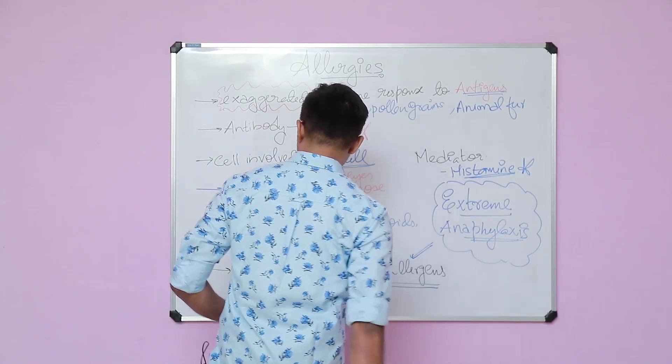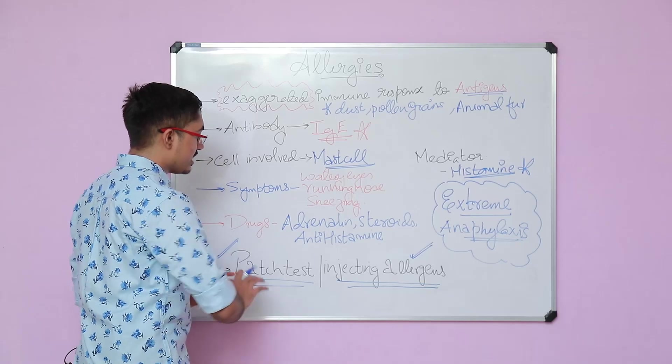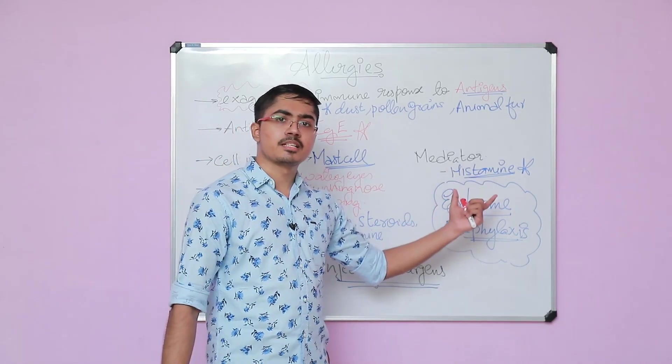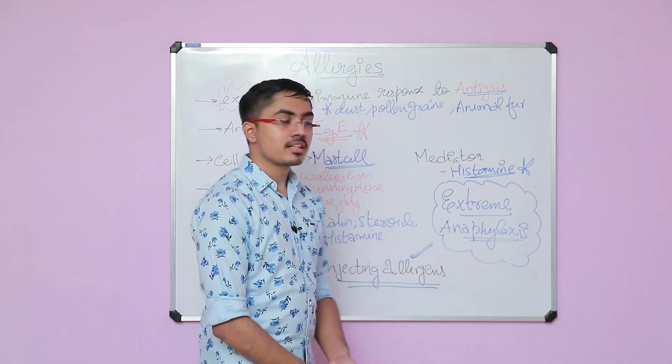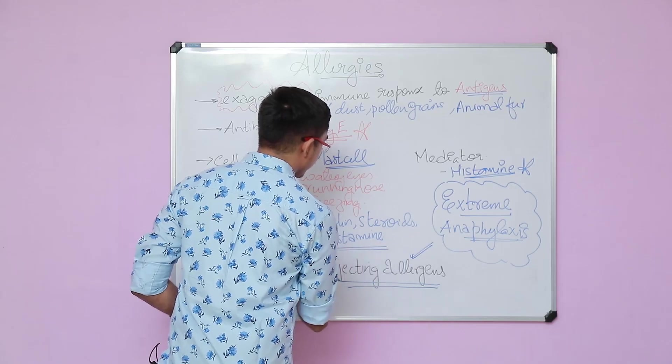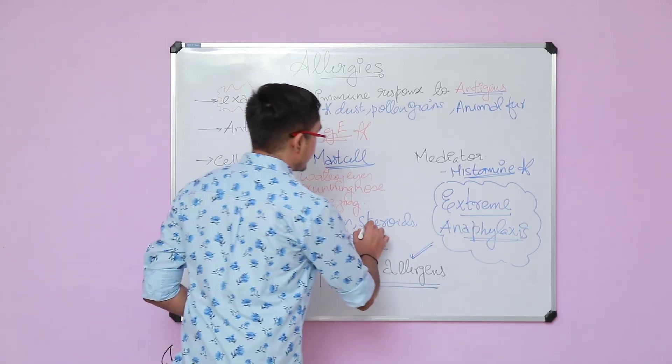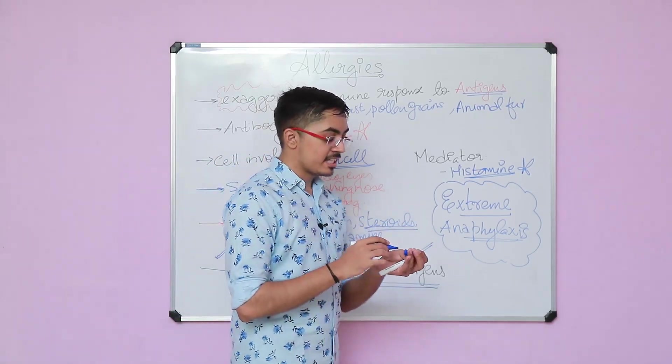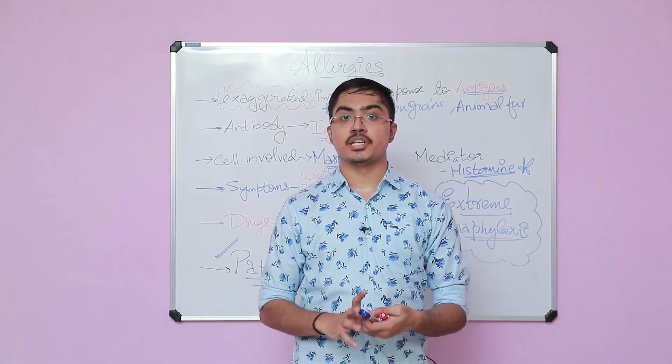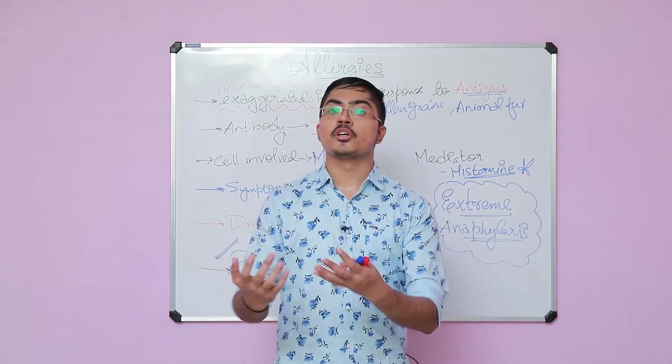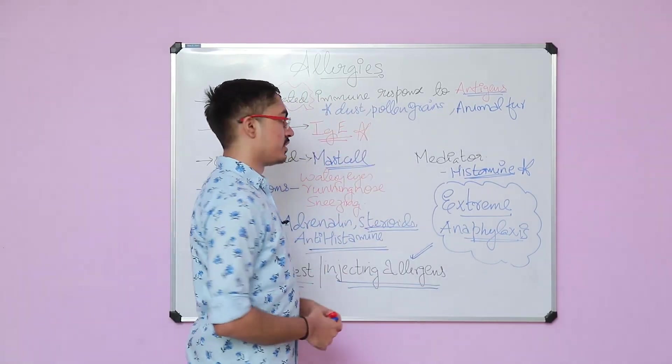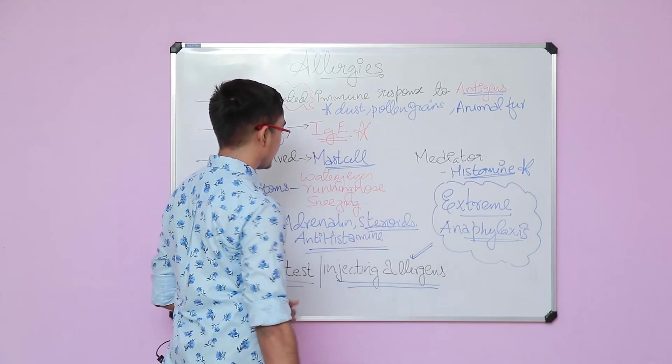With this, we come to the diagnosis. To treat it, I said the mediator is histamine. So if you give antihistamine drugs, definitely the person will have relief. Steroids are also used. Steroids help in decreasing the immunity of a person. That's why you take steroids in many autoimmune conditions. Since this is an exaggerated immune response, you will have to decrease the immunity. You can give steroids for that.